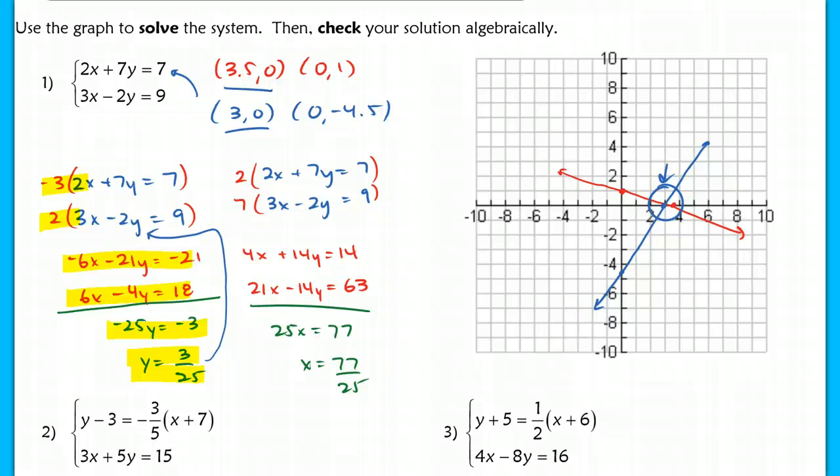Rather than plugging that value back into the original and solving for the x, I thought it might be just easier for me to re-solve the system and eliminate the y variables. This could be a way for you to also solve a little bit quicker by actually solving the system a second time, but this time eliminating the y's. So I multiplied by 2 and then 7 to get these two equations here, and then when I added those up and I eliminated the y's, I'm left with 25x equals 77, and x equals 77 over 25.